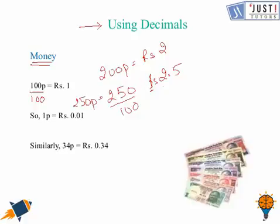So to convert paisa into rupees, we can divide it by 100 and we get the answer. Similarly, if we need to convert 1 paisa, that would be 1 over 100, so that would be 0.01 rupees. Similarly, we can convert 34 paisa as 0.34 rupees.